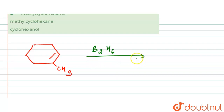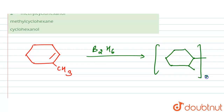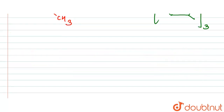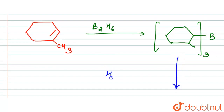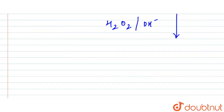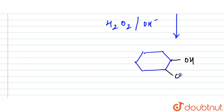The intermediate product is formed after the hydroboration step. Then the reaction proceeds in the presence of H₂O₂ / OH⁻. The final product has an OH group along with CH₃, and the relevant hydrogens are also accounted for in the structure.